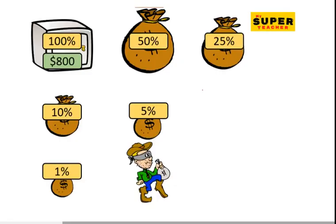Alright, so this is a summary of what we've been doing. Pause the video and attempt this: the money in the safe is $800. Find all these percentages.